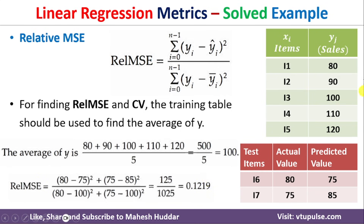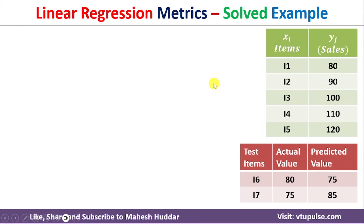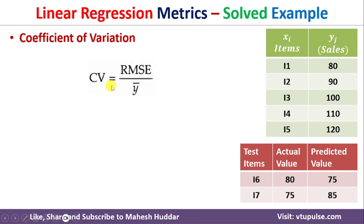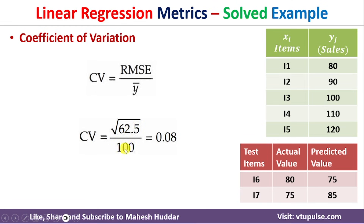The final metric for evaluating the performance of linear regression is Coefficient of Variation. CV is calculated as: CV = (RMSE / average) × 100. The average is 100 in this case, and RMSE is 7.91, so CV = 7.91 / 100 ≈ 0.0791, or approximately 7.91%.